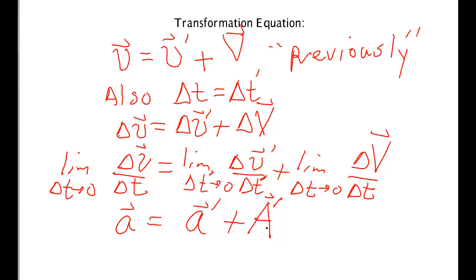If the two observers are moving at constant speed in a straight line with respect to each other, then neither of them measures the other as accelerating and capital A is zero and they will agree on A and A prime.